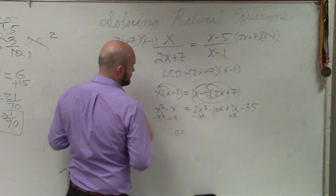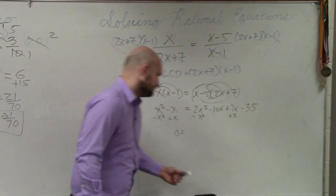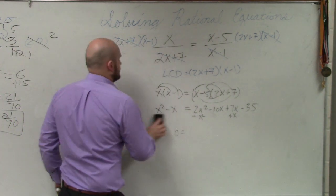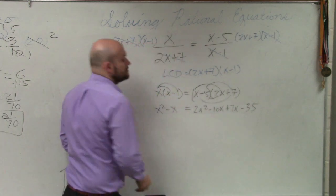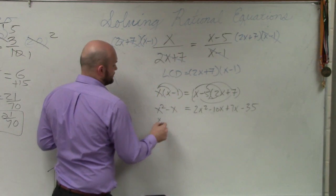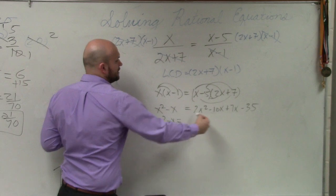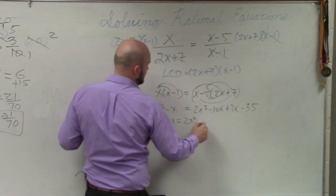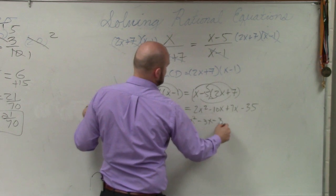You also have to subtract an x squared plus 7. OK. Can we do some combining first? We'll do some combining first so I don't overly confuse you. Let's combine our like terms here. I get 2x squared minus 3x minus 35. Do you follow me?